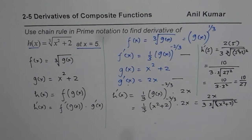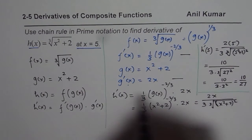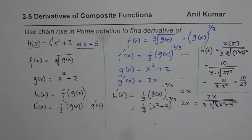So 10 over 27 is the value of the derivative of this function at x equals 5. That is how we find our solution. I hope that helps. Thank you and all the best.